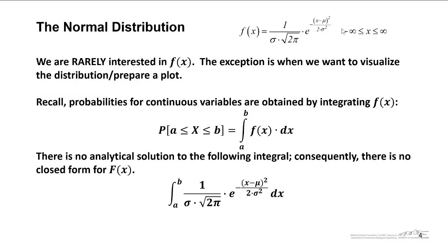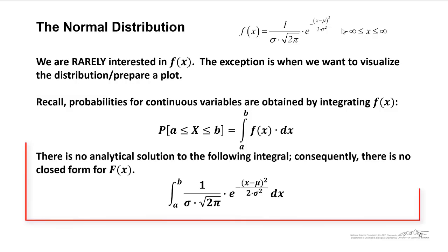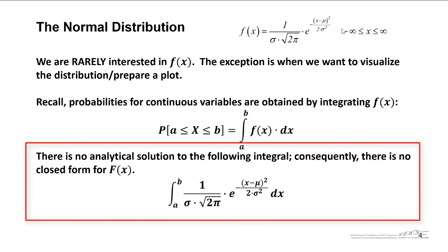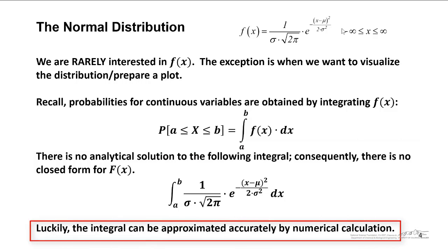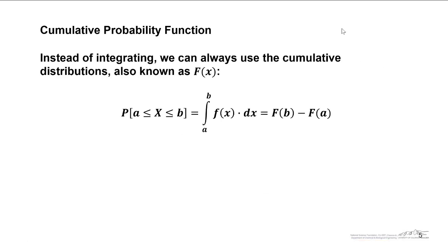There is no analytical solution to this integral — there's no closed-form expression for capital F(x). Instead, what we can do is calculate F(x) numerically. Luckily, the integral can be approximated quite accurately by numerical calculation, and we can also use Excel's norm.dist function. So instead of integrating, we can always use the cumulative distribution, also known as capital F(x). Recall that the probability that x lies between a and b — if we know the cumulative distribution capital F, we can just subtract capital F(a) from capital F(b).